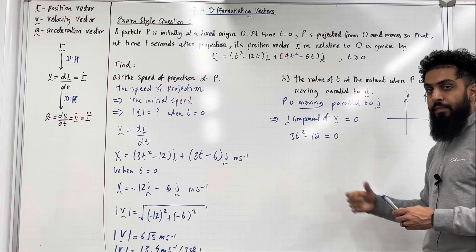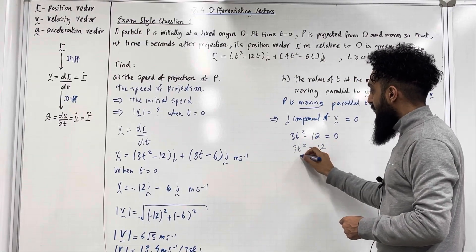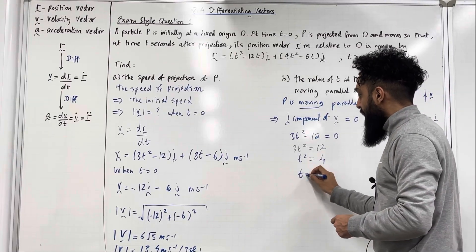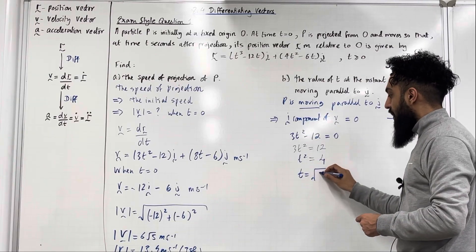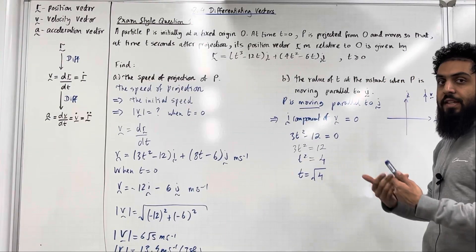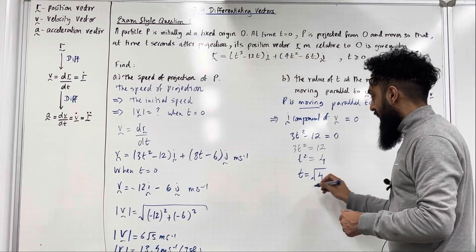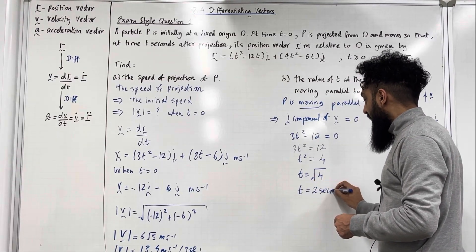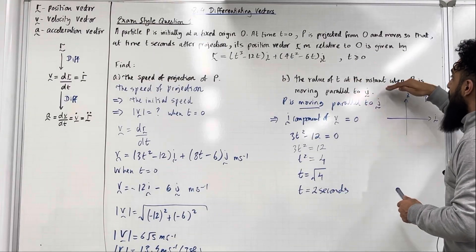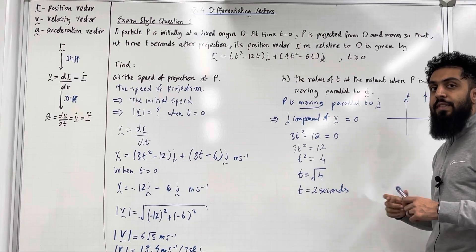Solving for t: 3t squared equals 12, so t squared equals 12 divided by 3 which is 4, and t equals the positive square root of 4. Remember time is positive — we have t greater than or equal to zero, so we take the positive square root. This gives t equal to 2 seconds. Hence the value of t at the instant when P is moving parallel to the vector j is t equals 2 seconds.